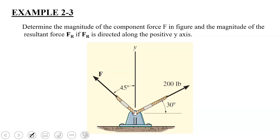We are given two forces. The first is a 200-pound force acting at an angle of 30 degrees with respect to the x-axis. The second is force F acting at an angle of 45 degrees, but its magnitude is unknown. We need to determine the magnitude of force F and the magnitude of the resultant force FR, given that FR is directed along the positive y-axis.